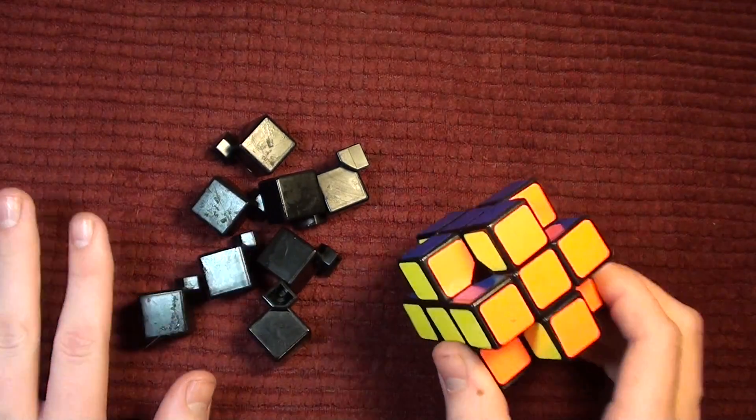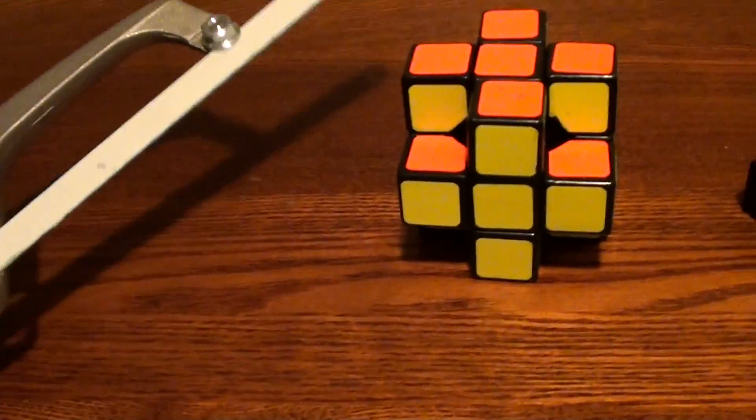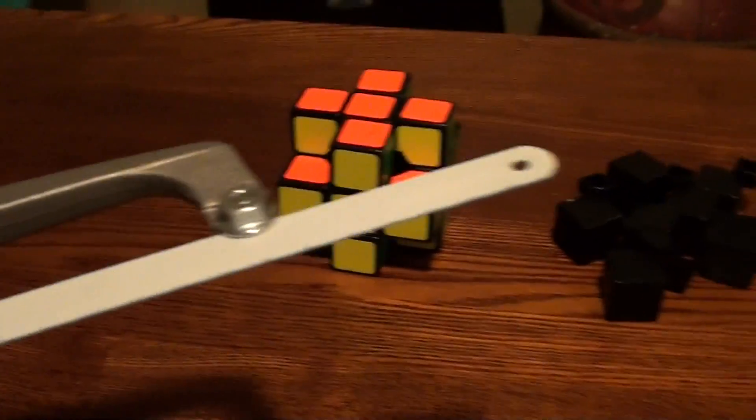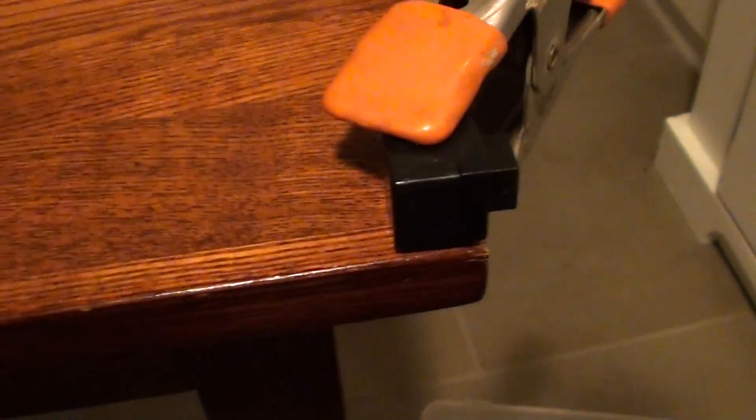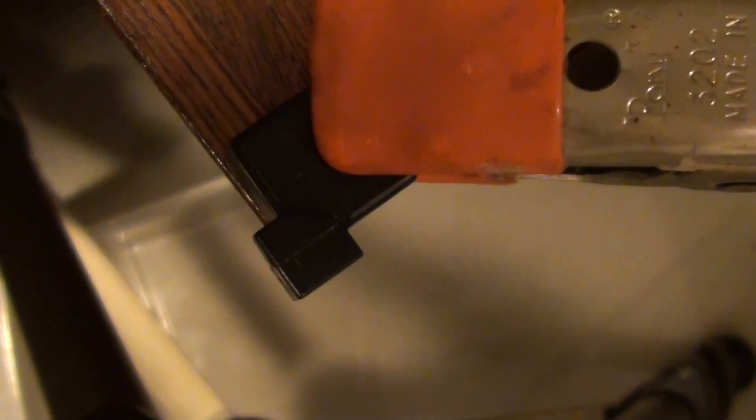Alright, so I think I have a good setup. I found this saw that seems to cut the pieces pretty well. I have a piece clamped to the table. Hopefully, all of the dust will go down into that container. And I also have the tripod set up there. Okay, let's get started.